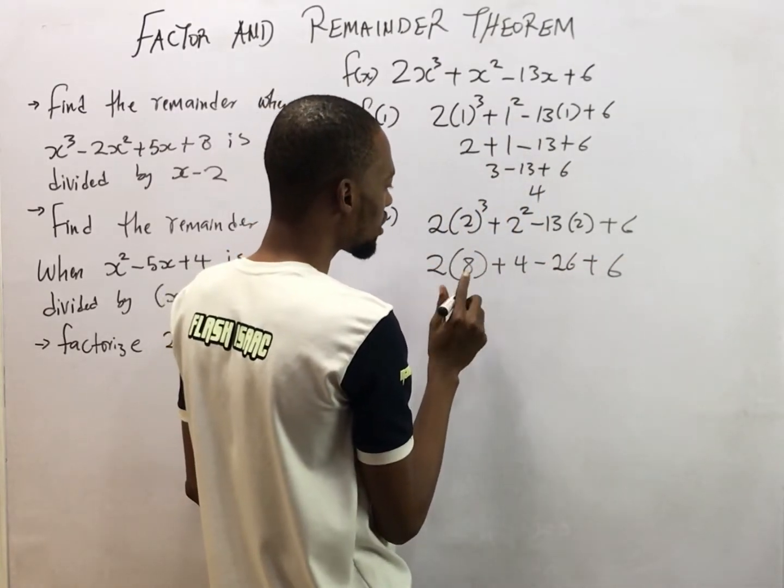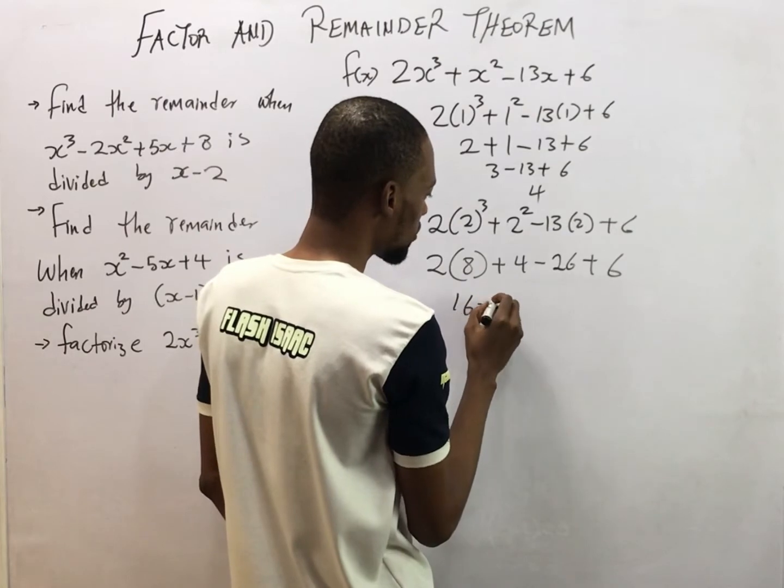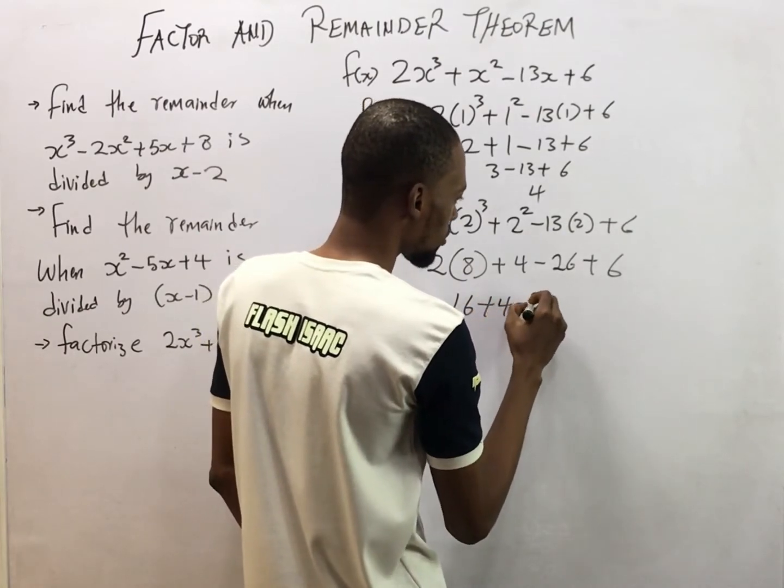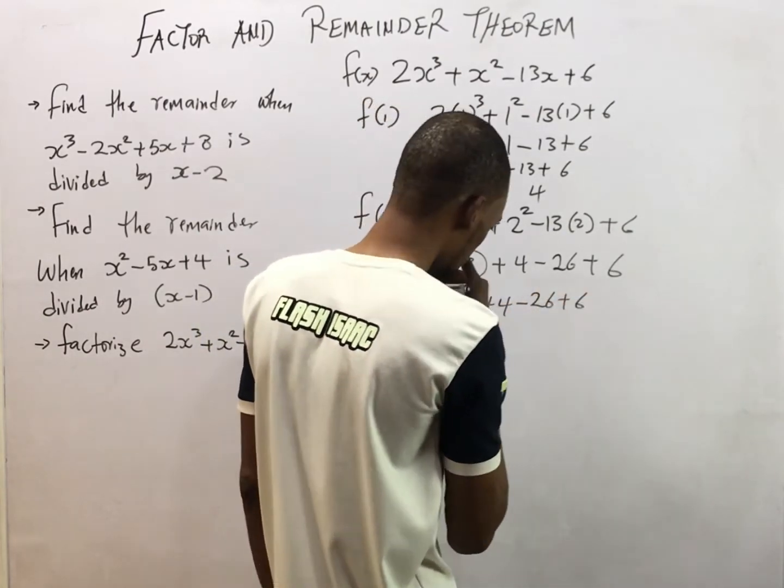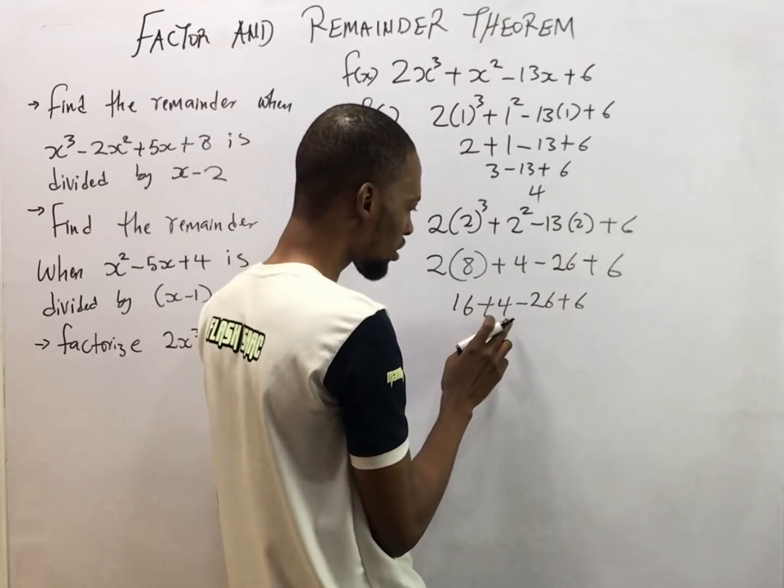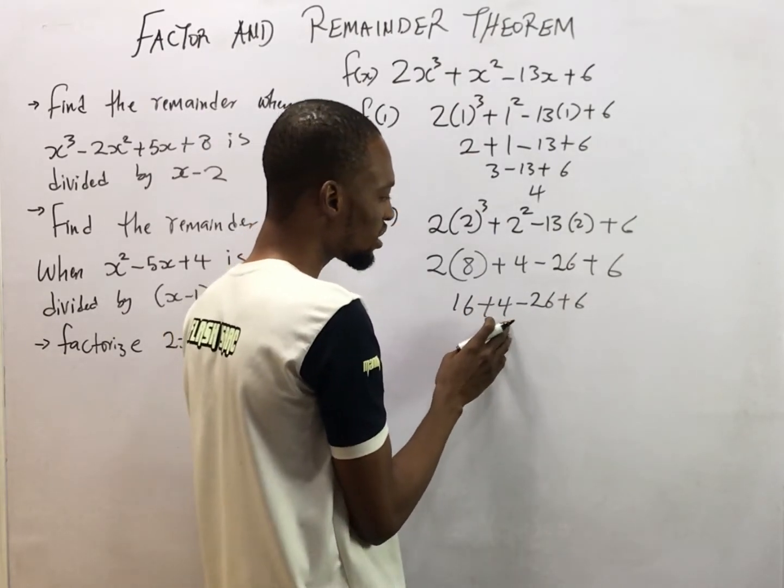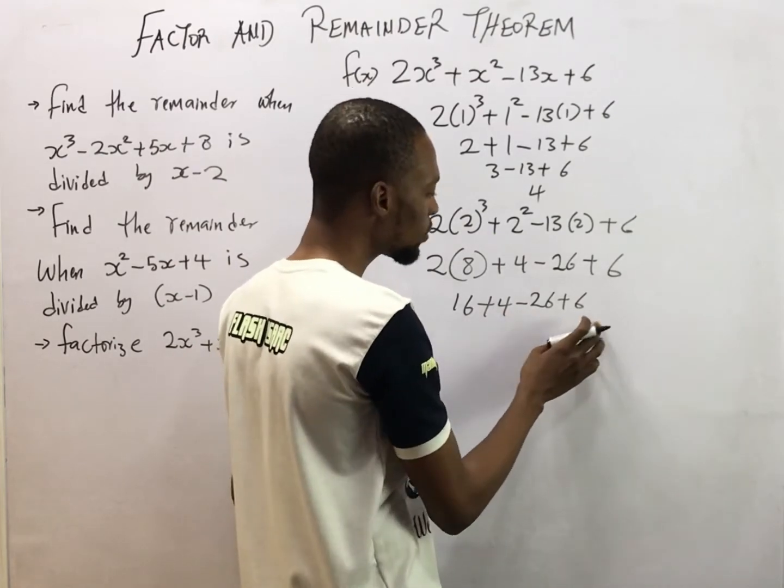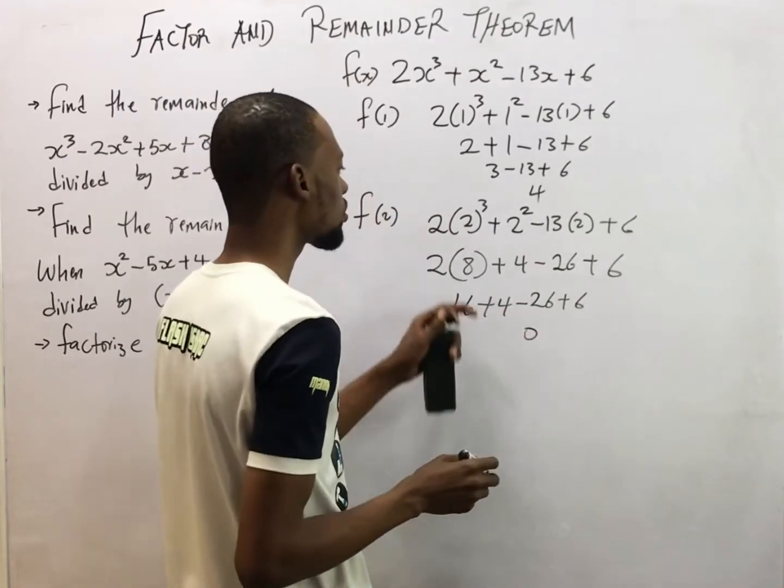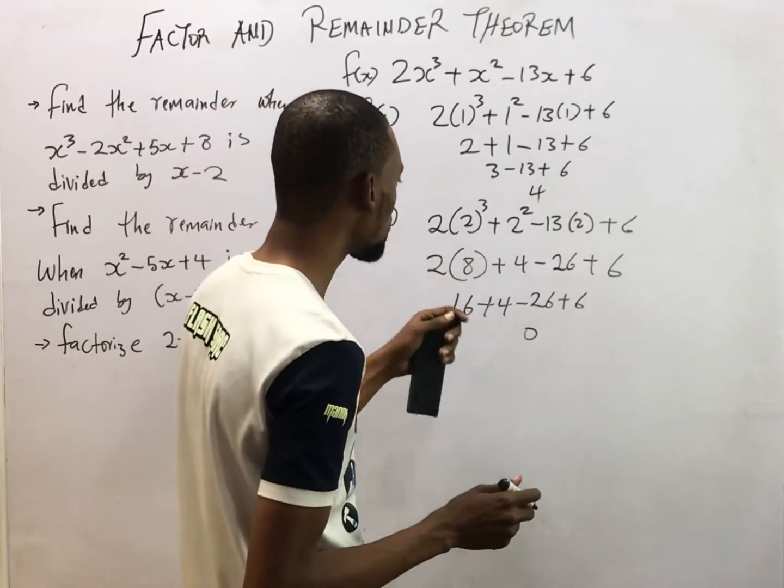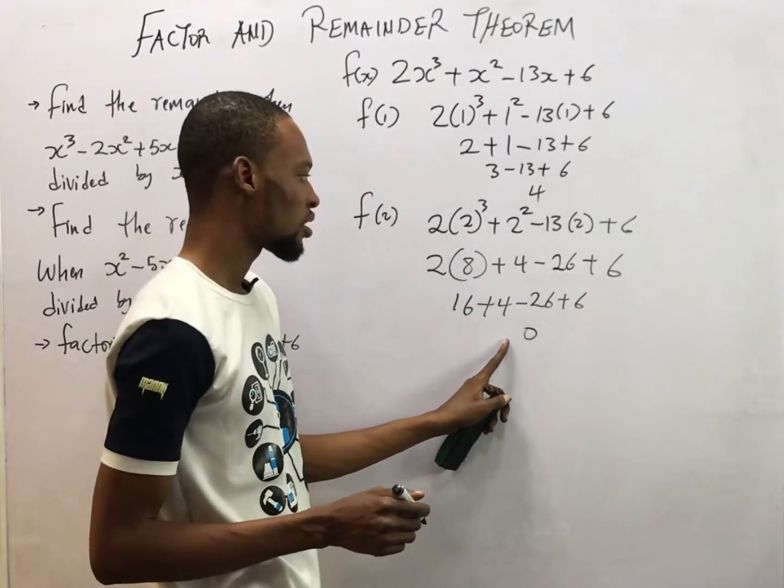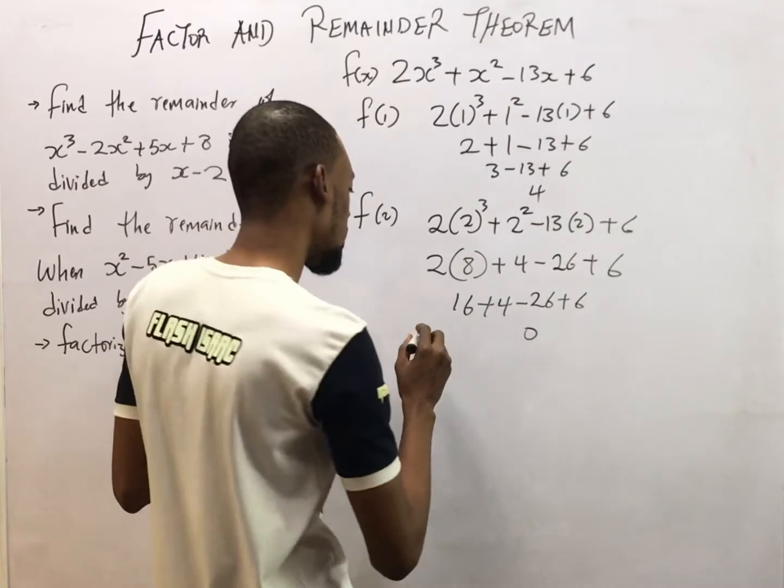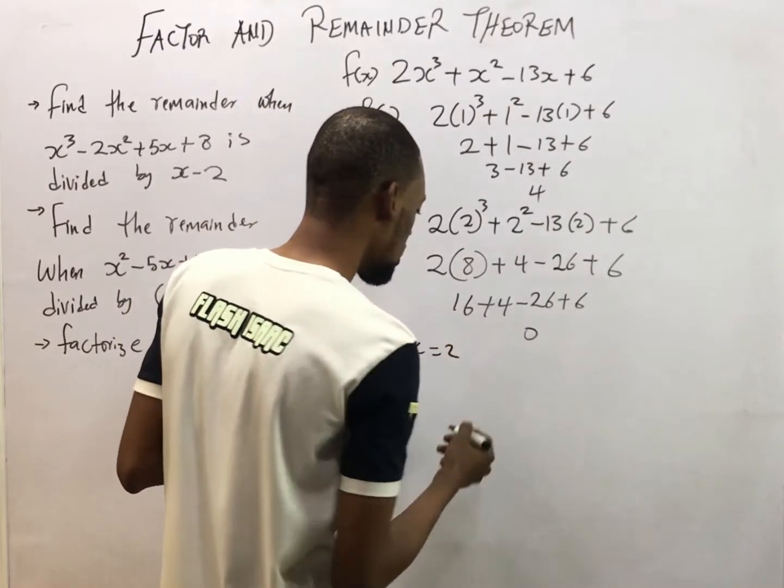2 times 8 is 16. So 16 plus 4 minus 26 plus 6. 16 plus 4 is 20. 20 minus 26 is minus 6. Minus 6 plus 6 is 0. So substituting 2 into the equation gave us 0. The remainder is 0. Therefore, 2 is a factor. So S equals 2 is a factor.